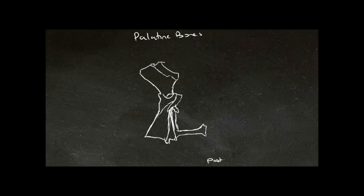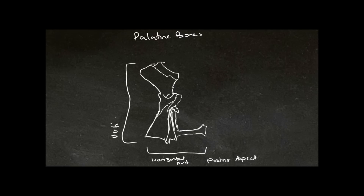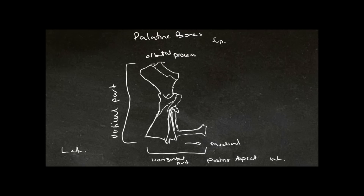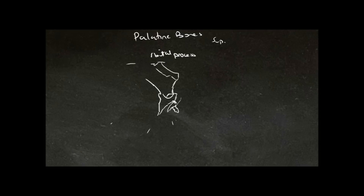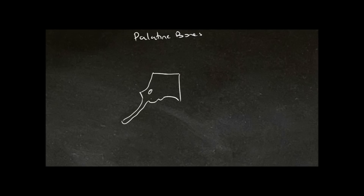So here we are looking at the posterior aspect now. Here is our vertical part and here is our horizontal part. Here is our orbital process up here, so this is superior. We can see that the horizontal part is extending medially, so we know that this side is medial and this side is lateral. We can see that the posterior part is the inferior aspect of the palatine bone.